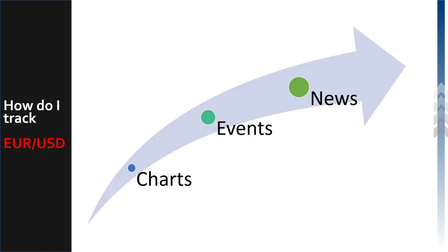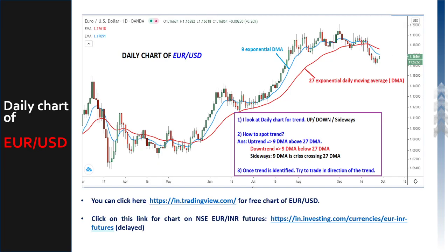Now, how do I track the Euro dollar? I use three types of filters: charts, events, and news. For charts, I use TradingView — a fantastic free interface at TradingView.com. You can create a login ID using your Gmail. I use the daily chart and the hourly chart to form a view. The daily gives me the trend, and the hourly gives me the entry, exit, stop loss levels, and the intraday trend of that pair.